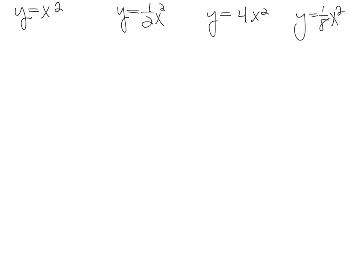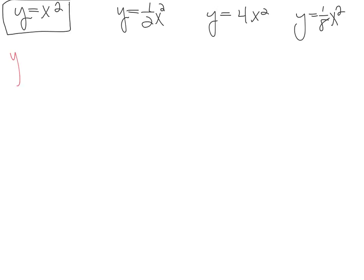Let's do some work to try to prove that all parabolas are similar. We're going to prove that all parabolas in the form y equals 1/(2p) x squared are similar to the parabola y equals x squared. We'll find an appropriate dilation about the origin. In lesson 34, we talked about this particular form for a parabola where p is the distance from the focus to the directrix.